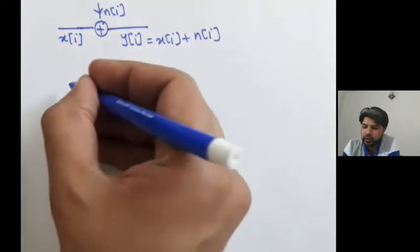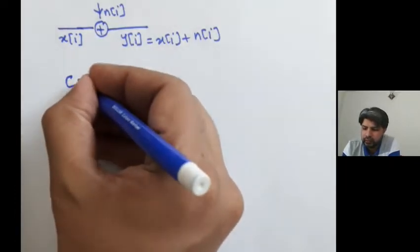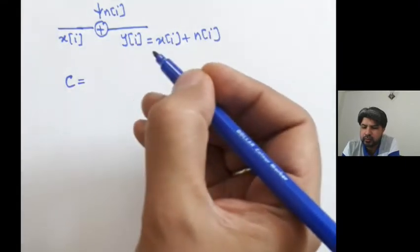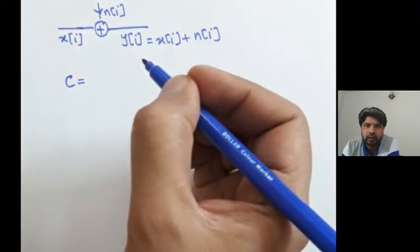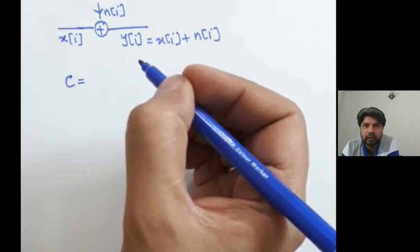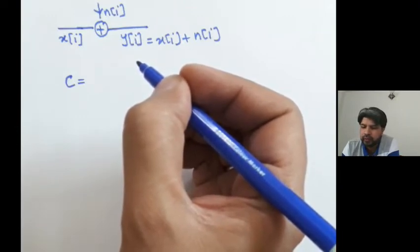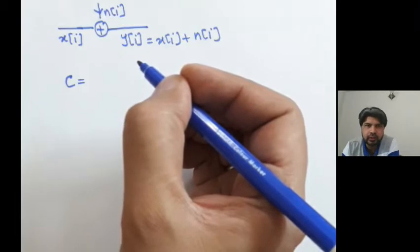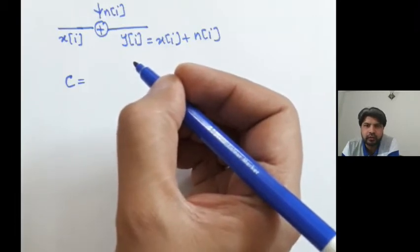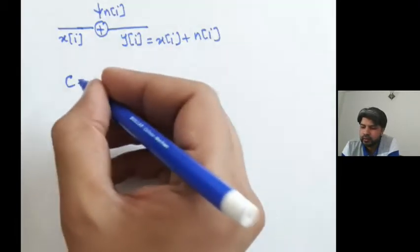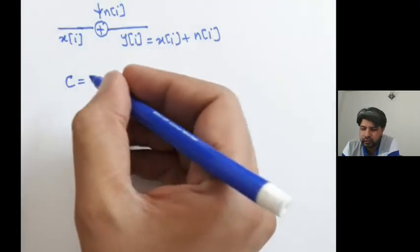And if you want to find out what is the capacity of the channel, which was defined as the maximum number of bits or the maximum information that you can transmit over a channel, and if the base of the logarithm is 2, then that information would have units of bits.